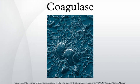Coagulase reacts with prothrombin in the blood. The resulting complex is called Staphylothrombin, which enables the enzyme protease to convert fibrinogen, a plasma protein produced by the liver, to fibrin. This results in clotting of the blood.